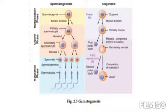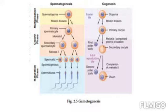The whole process of spermatogenesis takes about 64 days. At any given time, different regions of the seminiferous tubules contain spermatocytes in different stages of development — maybe primary spermatocytes, secondary spermatocytes, or spermatids.